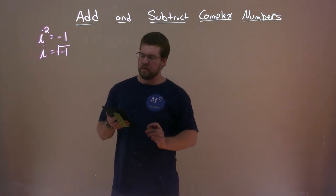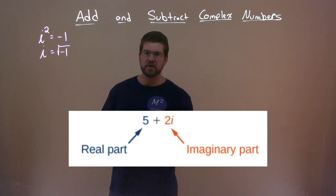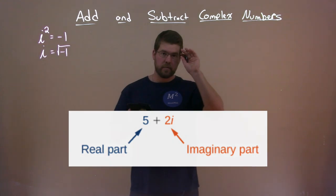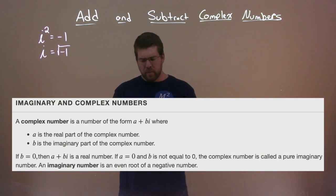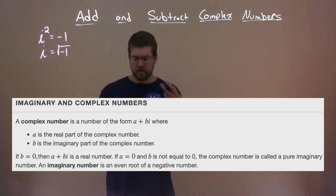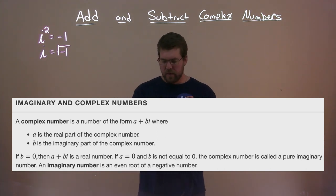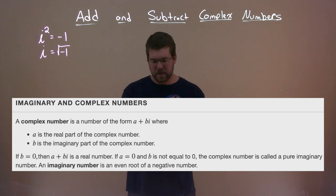So complex numbers have two parts: they have a real part and an imaginary part. The definition here for imaginary and complex numbers are as such. A complex number is a number of the form a plus bi, where a is the real part of the complex number, b is the imaginary part of the complex number. If b equals 0, then a plus bi is a real number. If a equals 0 and b is not equal to 0, the complex number is called a pure imaginary number. An imaginary number is an even root of a negative number.